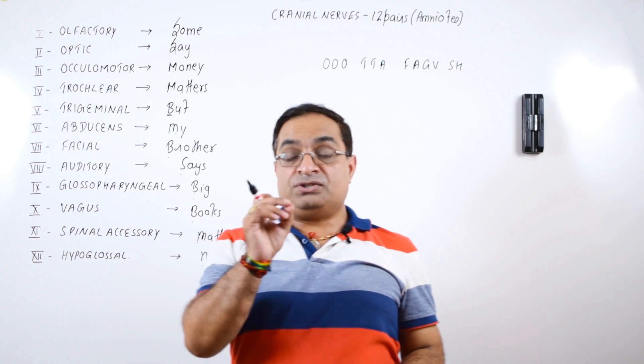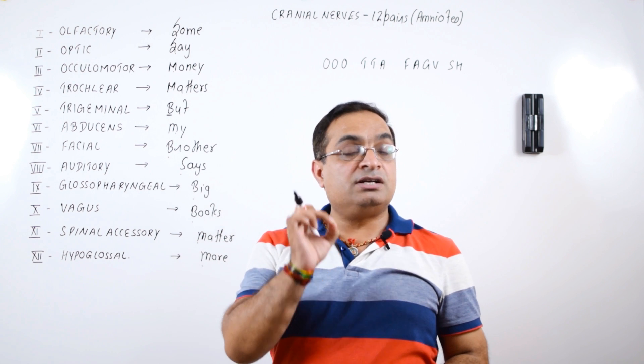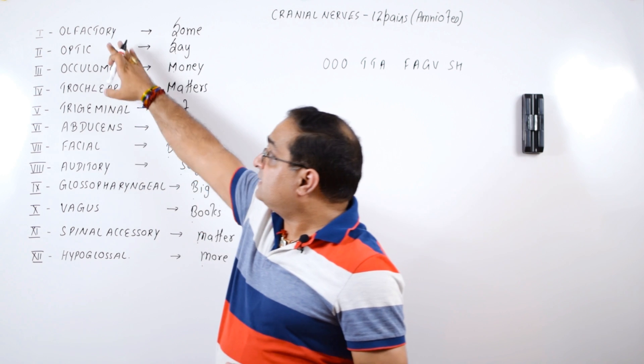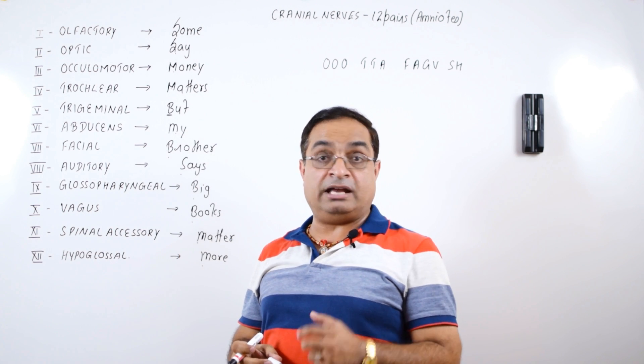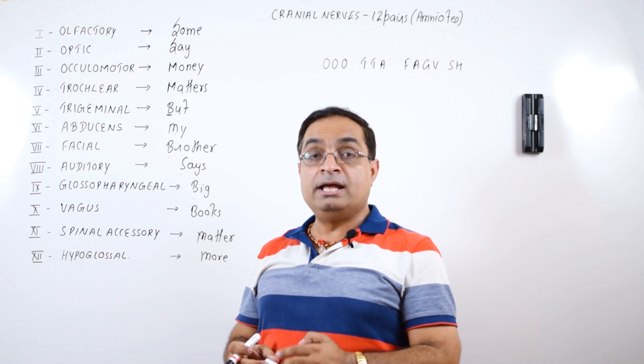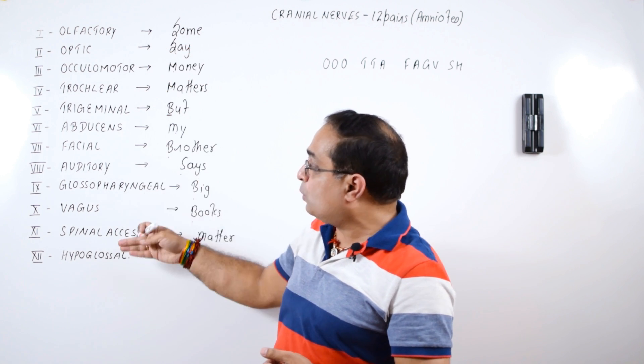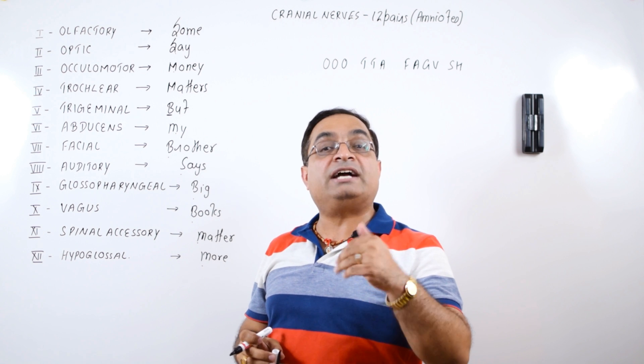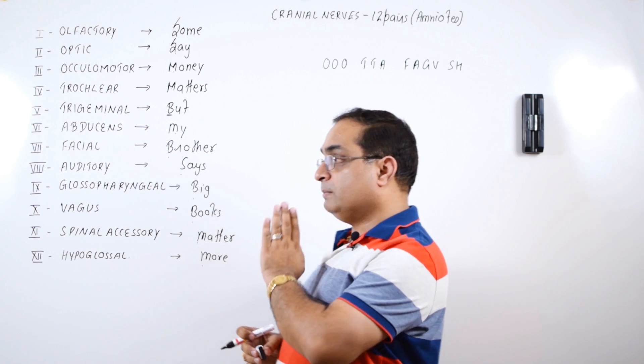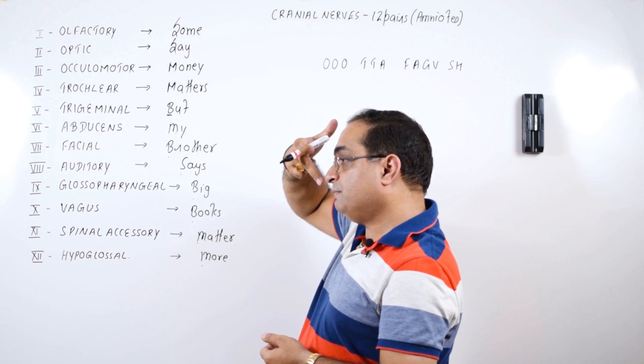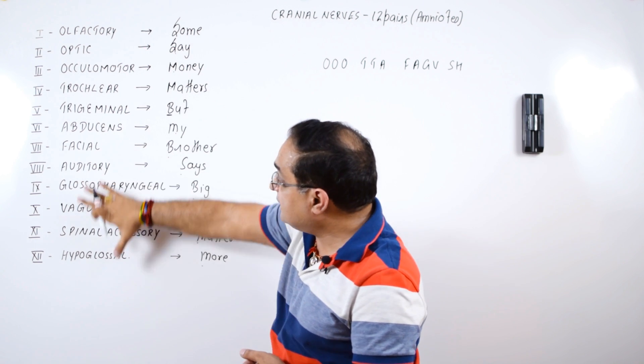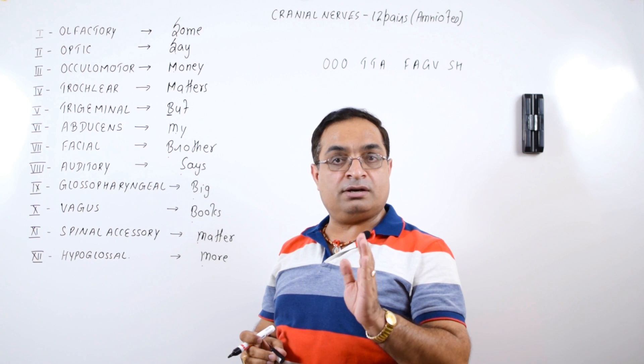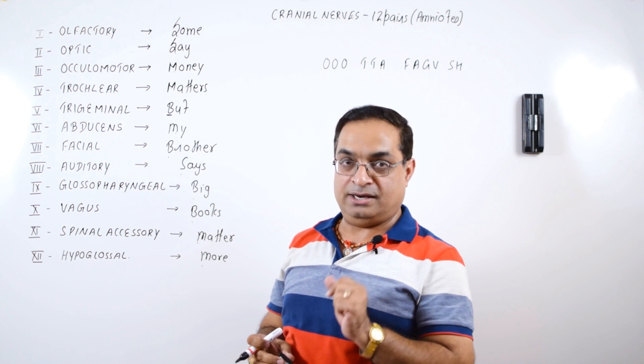Now first is olfactory, second is optic, third is oculomotor. Why these cranial nerves are numbered in this way? Why olfactory is the first one and why not optic is the first one? The reason is that this is the sequence with respect to attachment with the brain. If you look from the side, olfactory is the first one, then optic, then oculomotor. So this sequence is with respect to their attachment with the brain.